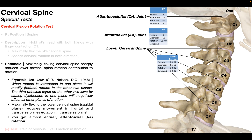The third principle sums up the other two laws by stating that dysfunction in one plane will negatively affect all other planes of motion. The part we care about is: when motion is introduced in one plane, it will reduce motion in the other two planes. Flexion occurs in the sagittal plane, so if we maximally flex the cervical spine, we're going to reduce motion in the coronal plane and reduce motion in the transverse plane — that's rotation.